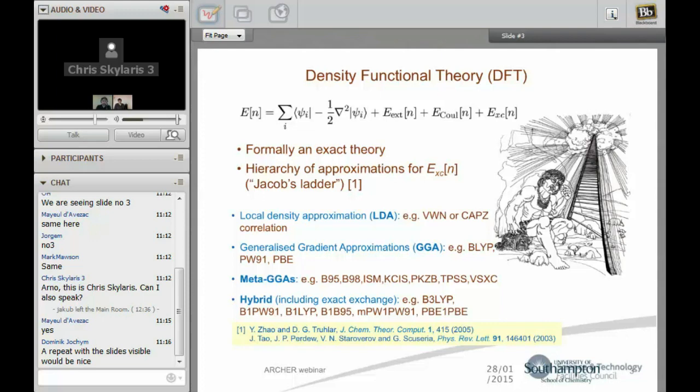Density functional theory has an advantage over traditional quantum mechanical calculations because it has a more favorable computational cost and you can use it on more electrons, so you can do a larger number of atoms and bigger molecules. It is formally an exact theory but in practice the last term, the E_XC exchange correlation functional is not known and we make approximations for this.